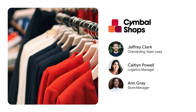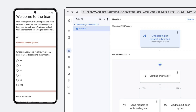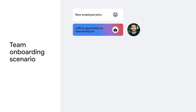Meet Jeffrey, Caitlin, and Anne from Symbol Shops. Jeffrey Clark is an onboarding group lead. Caitlin Powell is the logistics manager. Anne Gray is the store manager. New employees onboard in groups and receive welcome kits. They use Google Forms to specify equipment size and style preferences for a few fun items. Jeffrey, the onboarding lead at Symbol Shops, curates a kit for each employee in the incoming group.